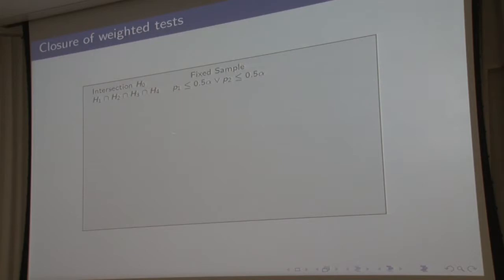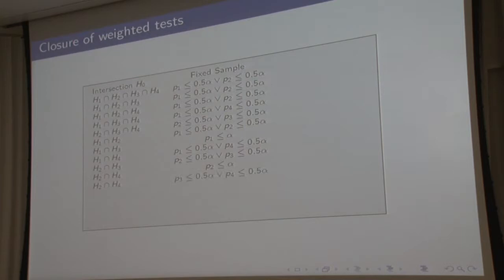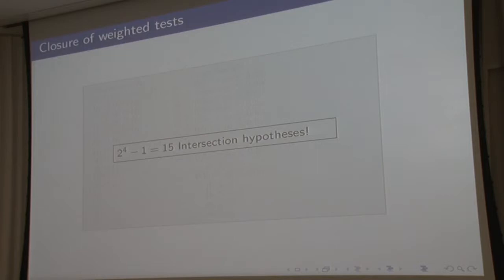To illustrate: the intersection of all four hypotheses is tested with the p-values of the primary endpoints. The intersection of three hypotheses is tested with the Bonferroni test of the two primary endpoints. Some intersection tests use p-values from only one treatment's primary endpoint and the other treatment's secondary endpoint — you also have to care about these intersections. The graph automatically defines all of them, so you don't have to worry about them individually. In total, 15 intersection hypothesis tests are performed implicitly.